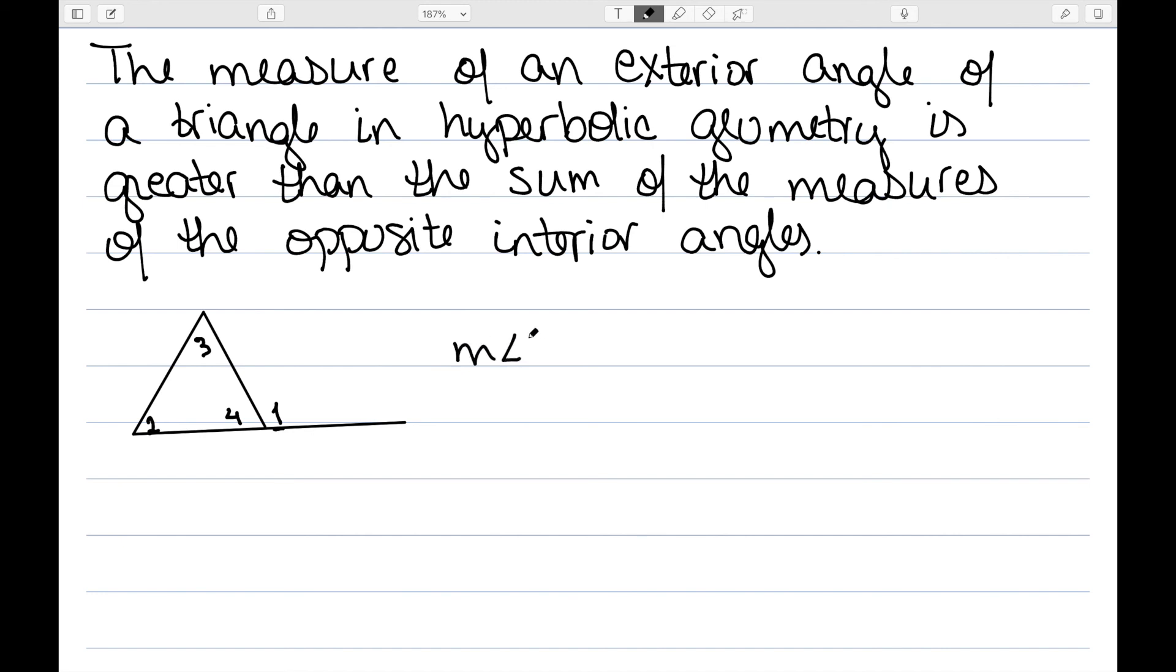We know that the measure of angle 1 plus the measure of angle 4 is equal to 180, since they are supplementary angles. We also know that that needs to be greater than the measure of angle 2 plus the measure of angle 3, plus the measure of angle 4, since that's our angle sum.